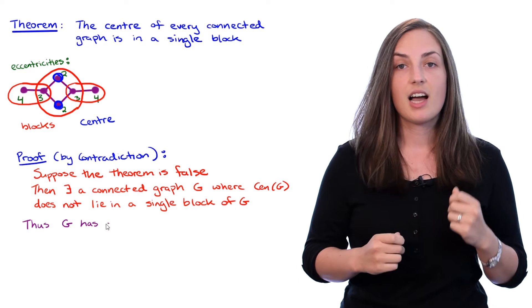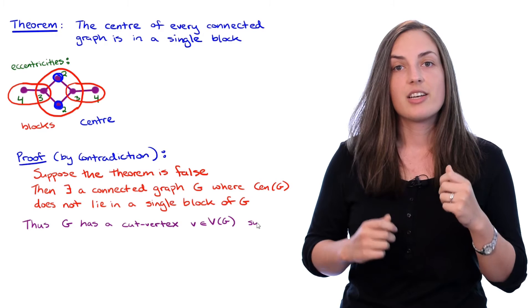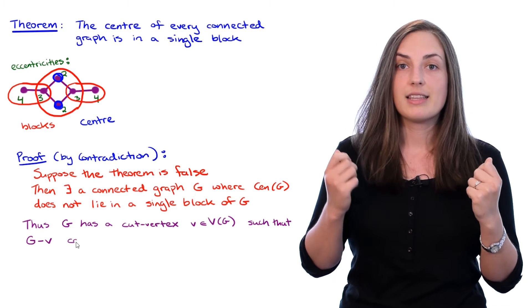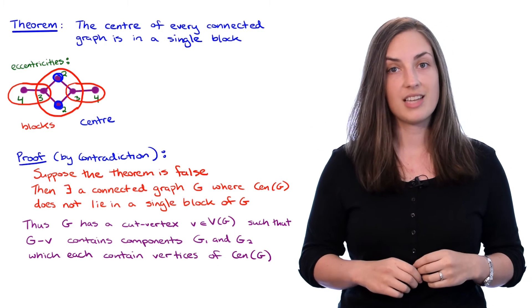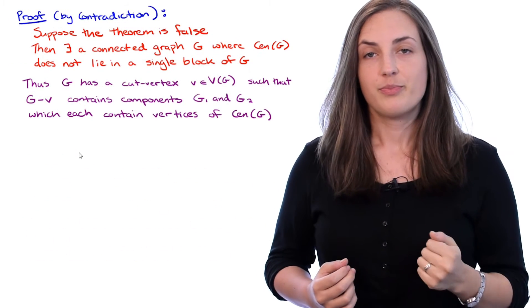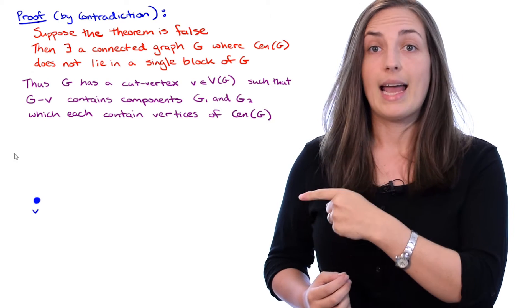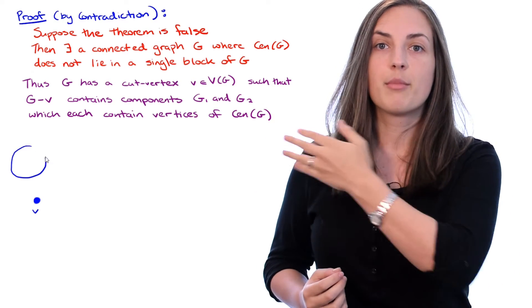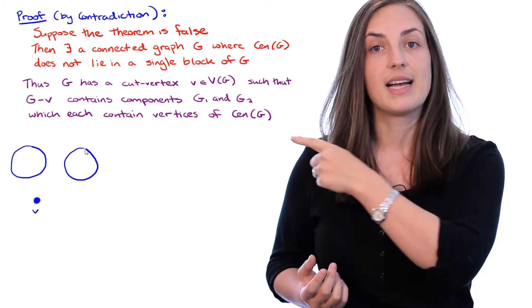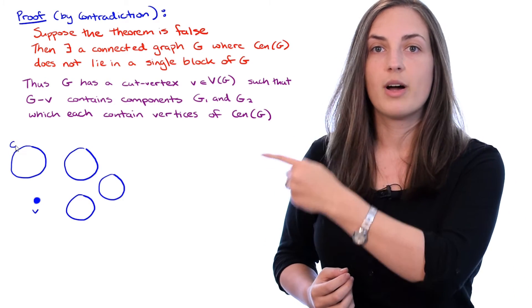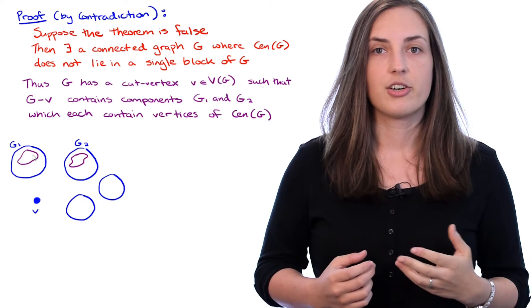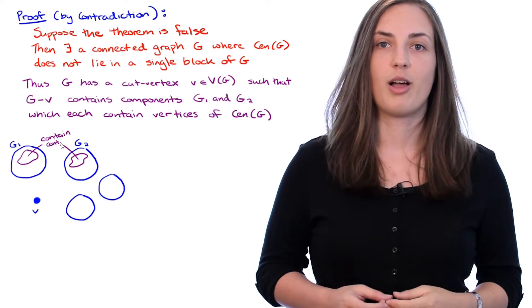So G has a cut vertex V such that G without V will have at least two components G1 and G2 which both contain vertices of the center. Let's draw a picture. We know we have vertex V and when we remove it, we have some number of connected components. Let's draw those as a bunch of blobs. We also know that two of those blobs G1 and G2 will contain vertices of the center. So I'll draw those as blobs within those blobs.